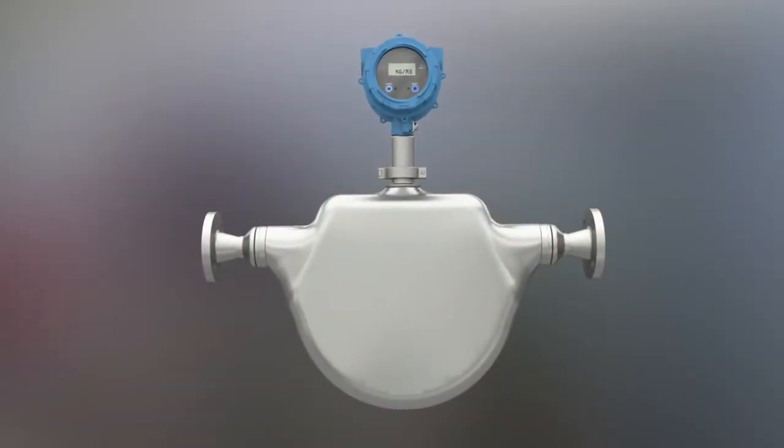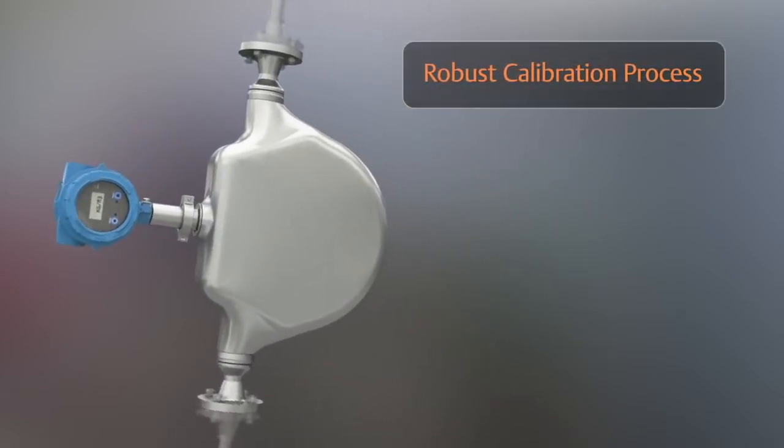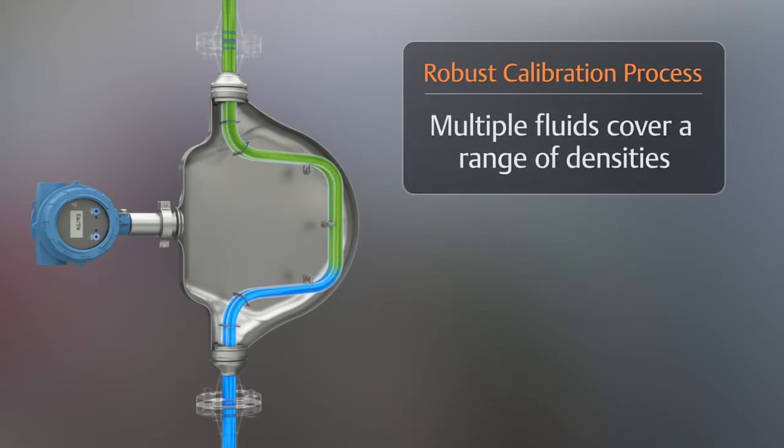Let's look at how this is measured using a robust accredited calibration process. The Compact Density Meter is calibrated using multiple fluids to cover a range of densities and to ensure a linear response.